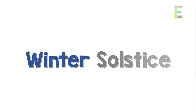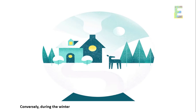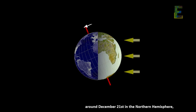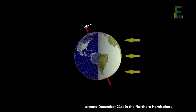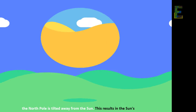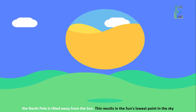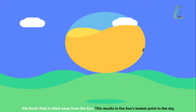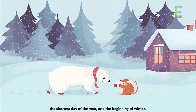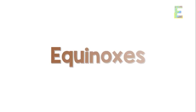Winter solstice — conversely, during the winter solstice, around December 21st in the northern hemisphere, the north pole is tilted away from the sun. This results in the sun's lowest point in the sky, the shortest day of the year, and the beginning of winter.